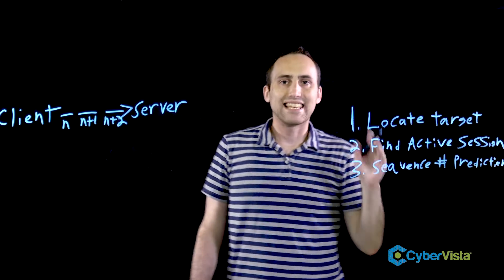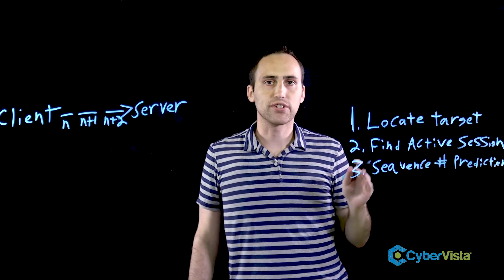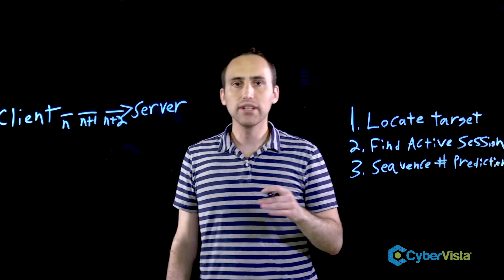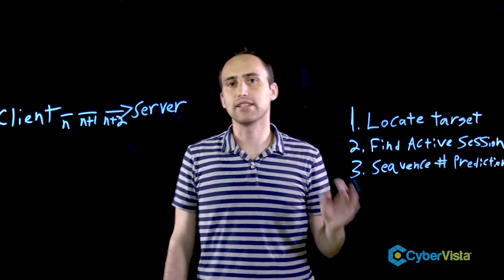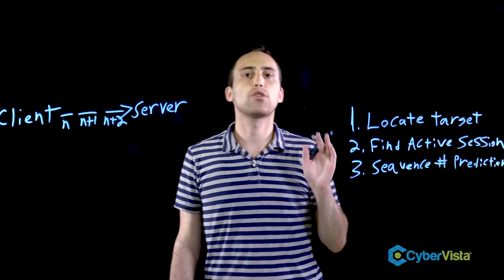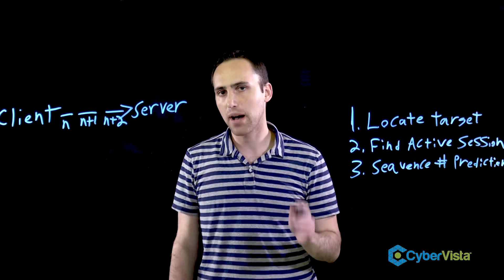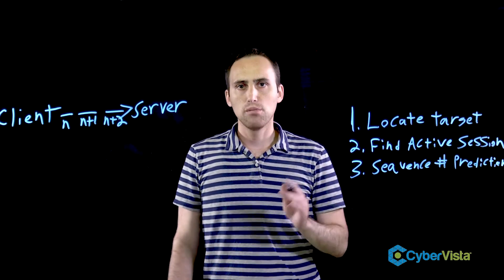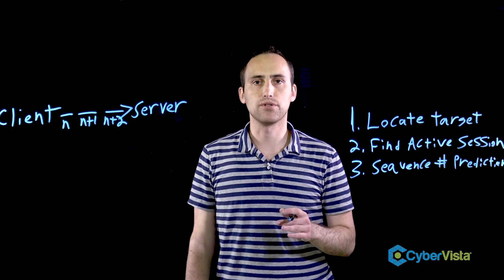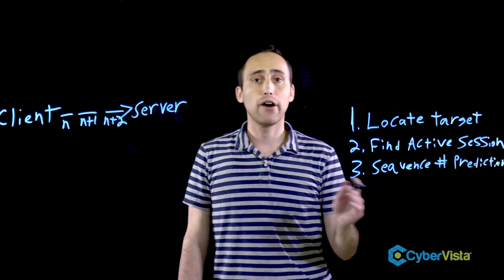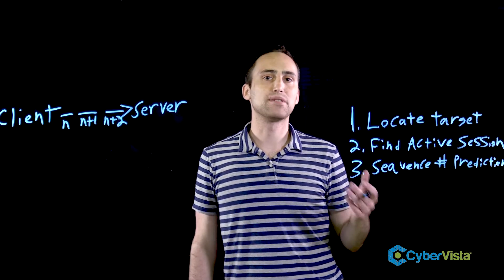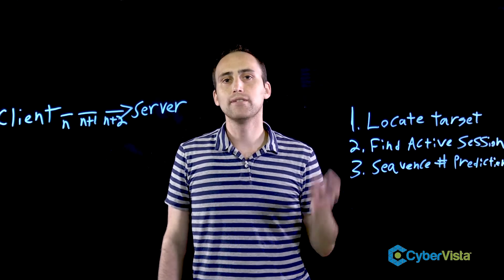This involves guessing the next sequence number that a server is expecting from a workstation. Hackers can do this manually or with certain software tools that automate the process. TCP/IP sequence numbers are 32-bit numbers, meaning there are four billion possible combinations for each sequence number. Most modern operating systems use random number generators that produce complex sequence numbers that are extremely difficult to guess. However, older operating systems do not provide sufficient random number generation, making these types of systems more vulnerable.